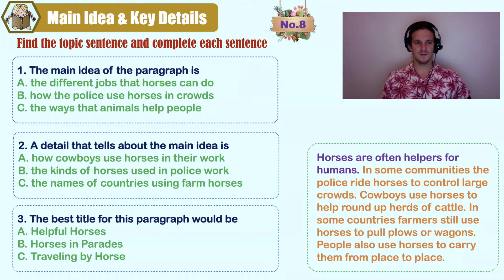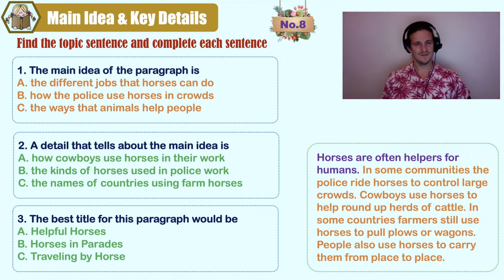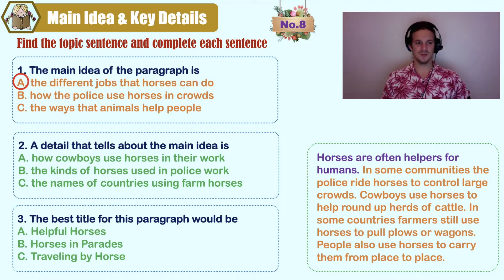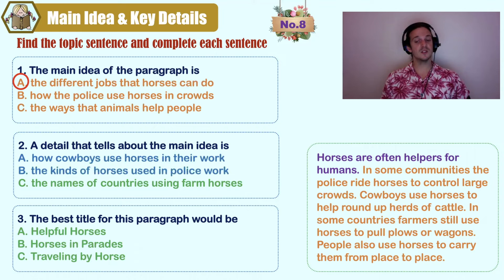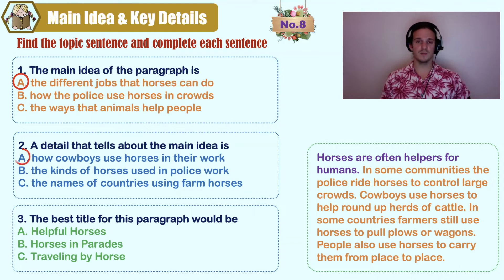What is the main idea? A) the different jobs that horses can do, B) how the police use horses in crowds, C) the ways that animals in general help people. Read the topic sentence: 'Horses are often helpers for humans.' That answers A — the different jobs that horses can do. What details can you find? A) how cowboys use horses in their work, B) the kinds of horses used in police work, C) the names of countries using farm horses. A, B, and C are all about the main idea, but only one is found in the paragraph, and that's A.